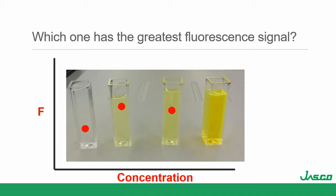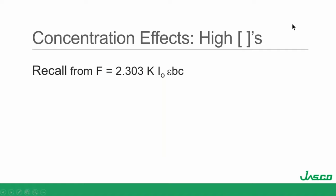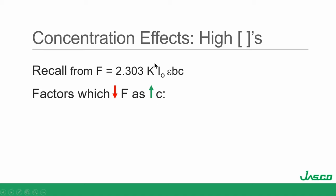Concentration effects at high concentrations: factors that decrease fluorescence as concentration increases. Number one is self-quenching — molecules bump into each other because there are so many, and non-radiatively deactivate. There are so many molecules around they could form a new species — dimers or other aggregation that quench the fluorescence. There could be energy transfer going on, and these inner filtering effects. Taking a real visual look: in a standard cuvette viewed from the top, you can actually see the band of fluorescence. Excitation comes in from one direction across the cuvette — we get emission across the full width. That's typical fluorescence: we excite all the molecules and get emission, no inner filtering at all.